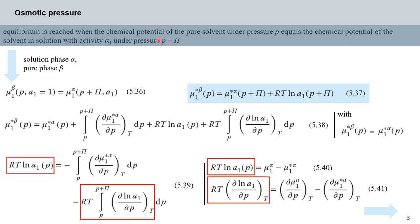We take this statement as a starting point for a quantitative analysis. We denote the solution phase as alpha and the pure phase as beta. Then our equilibrium condition, equation 536, is: mu₁^beta at p with a₁ = 1 must equal mu₁^alpha at pressure p plus large pi (the osmotic pressure) with activity a₁. We can also write this as: mu₁*^beta at the given pressure equals mu₁*^alpha at p plus pi, plus RT ln a₁(p + pi).